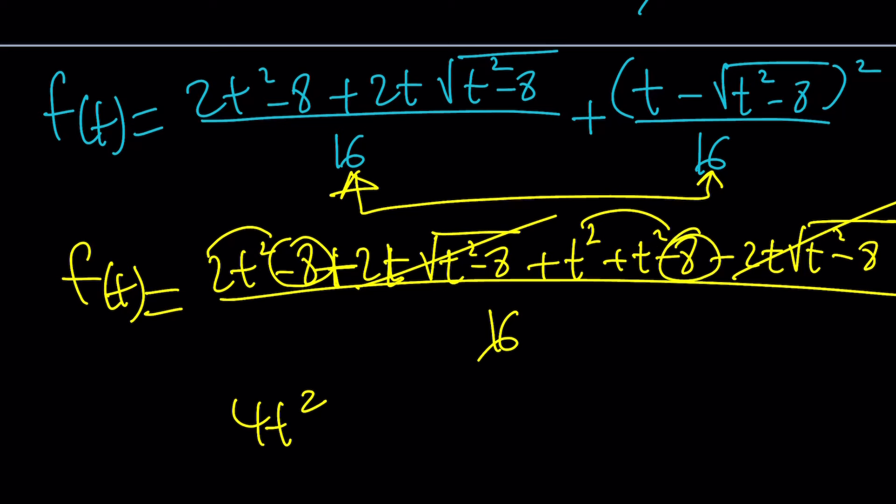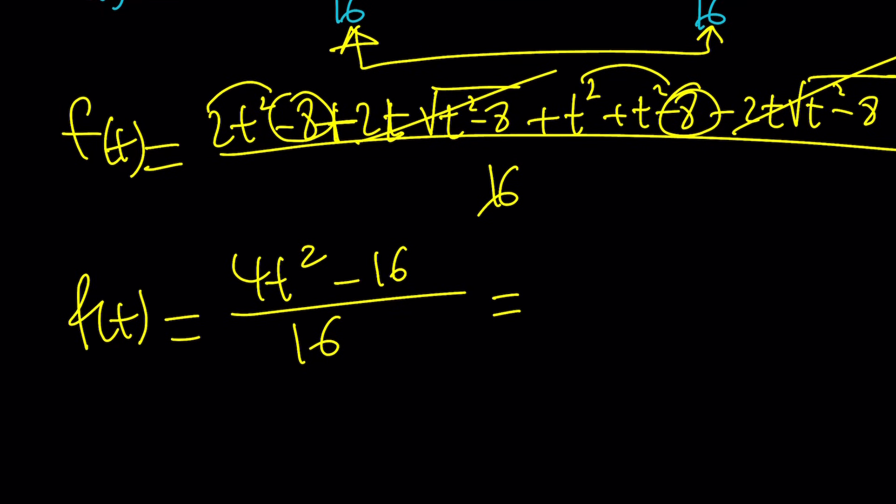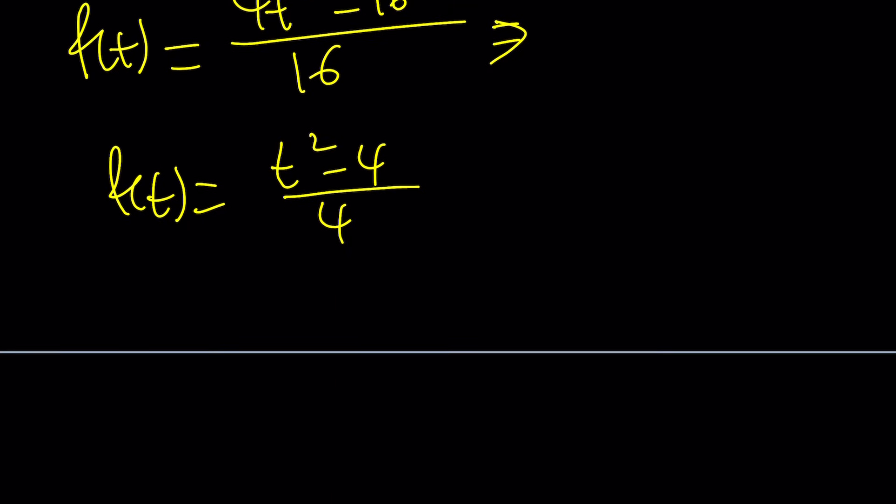And then, that's going to give me a minus 16. And divided by 16. So, this should be, when simplified, divide everything by 4. It's going to be f of t is going to be t squared minus 4 all over 4. Obviously, there's more than one way to write it. But, let's go ahead and talk about the second method real quick. Because, the second method is real quick.